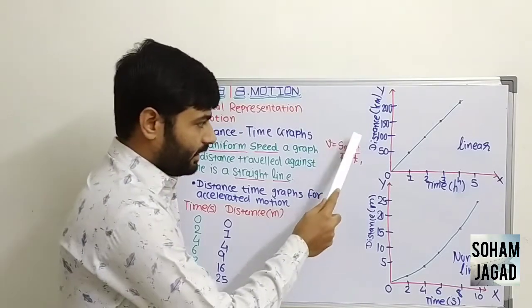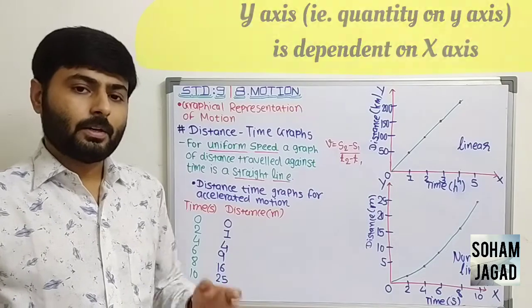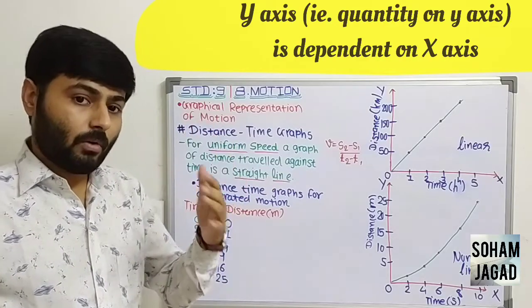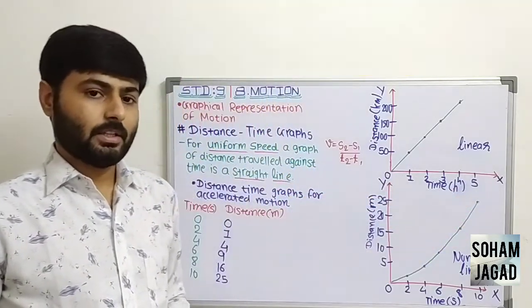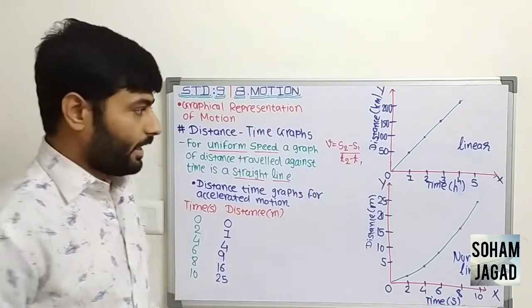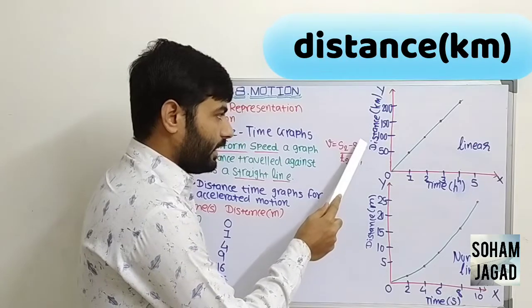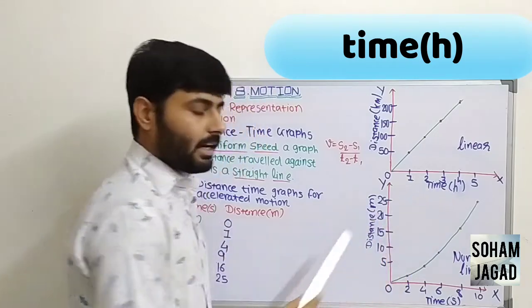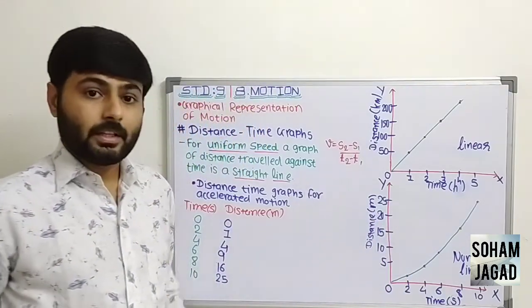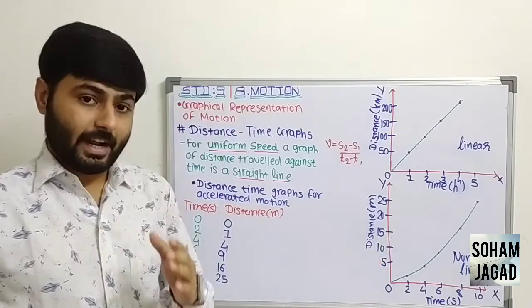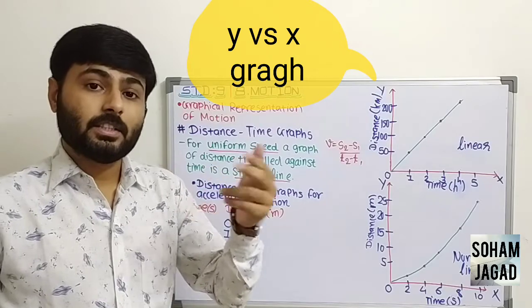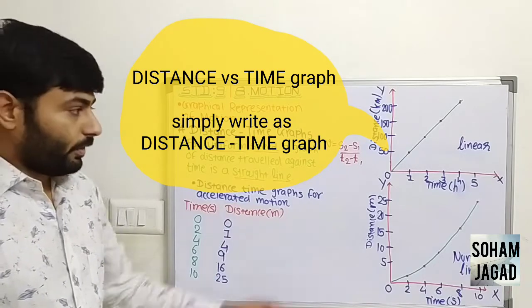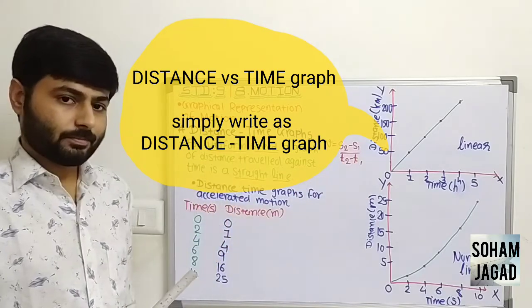Remember, y axis is the dependent axis. We describe the quantity on y axis which is dependent on the quantity on x axis. Taking this graph as an example, on y axis we took distance in kilometers, and on x axis we took time in hours. So distance covered is dependent on time, and we write this as a distance vs time graph.